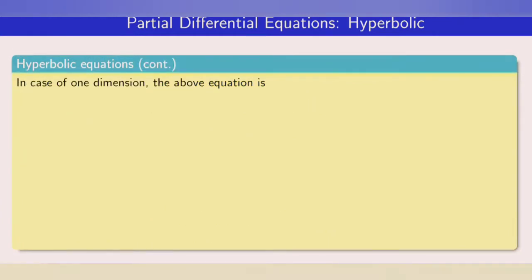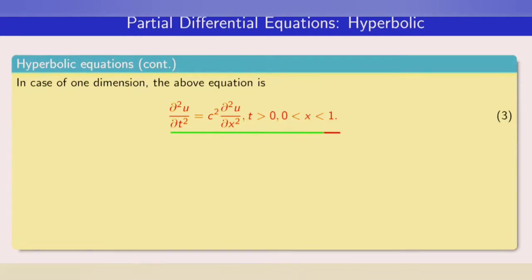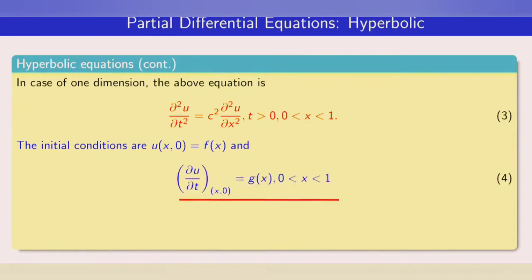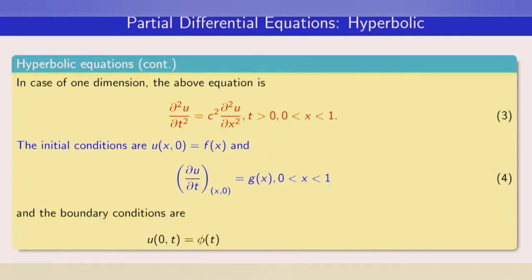In the one-dimensional case, the equation becomes d²u/dt² = c²(d²u/dx²), where t > 0 and x lies between 0 and 1. The initial conditions are u(x, 0) = f(x), and ∂u/∂t at t = 0 equals g(x), for x in [0,1]. The boundary conditions are u(0, t) = φ(t) and u(1, t) = ψ(t) for t ≥ 0, where φ(t) and ψ(t) are given functions representing the boundary conditions.